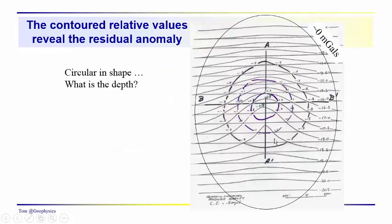This is a pretty crude, hand contoured image of the result that you might obtain if you do that. You can see where the regional lines have just been extended through the area and we've just looked at the relative value of the actual anomaly relative to the regional field which cuts through the area. So we've got a circular anomaly.